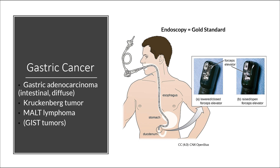In this series we are going to focus on gastric cancer. There are a few key types of gastric cancer that you will need to be aware of for your boards. These include gastric adenocarcinoma, including the intestinal and diffuse subtypes. We will also review the Krukenberg tumor as well as MALT lymphoma.